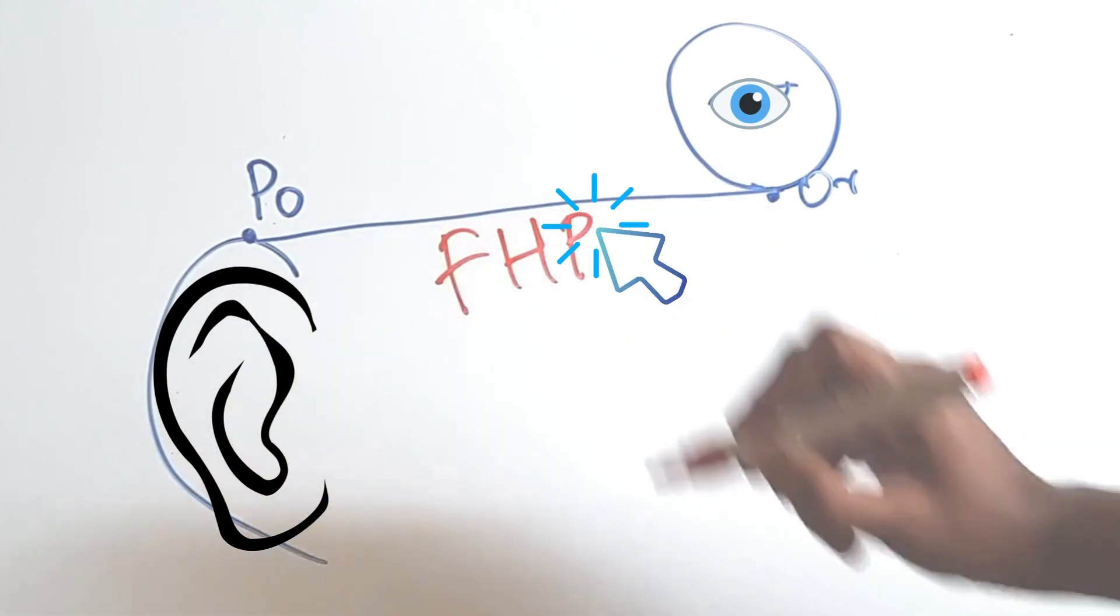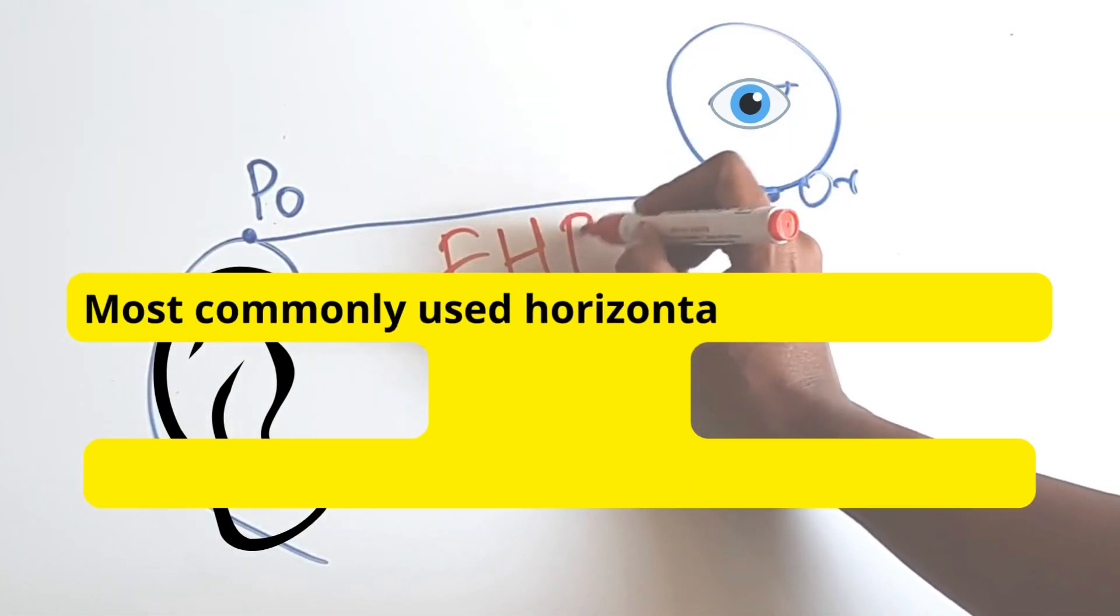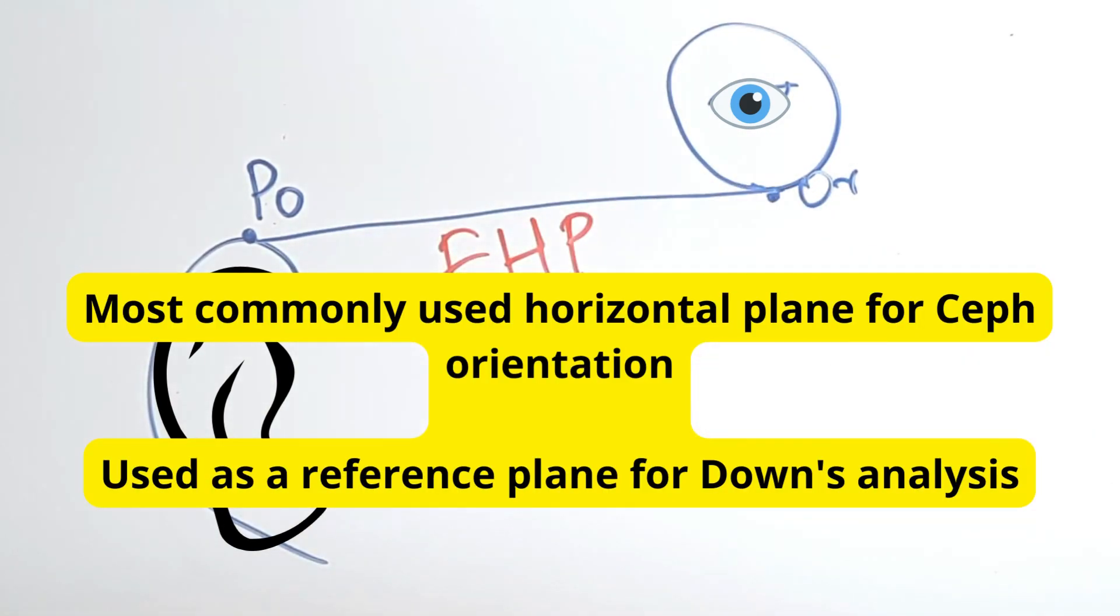This plane from porion to orbital is called the Frankfurt horizontal plane. It is the most commonly used horizontal plane for cephalometric orientation and it is used as a reference plane in Down's analysis.